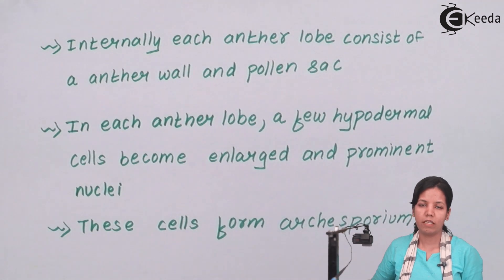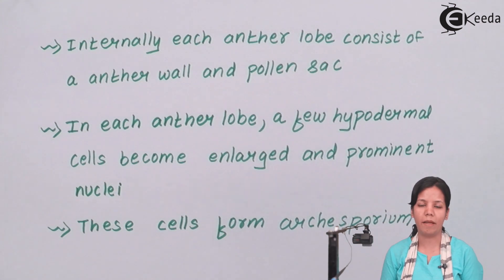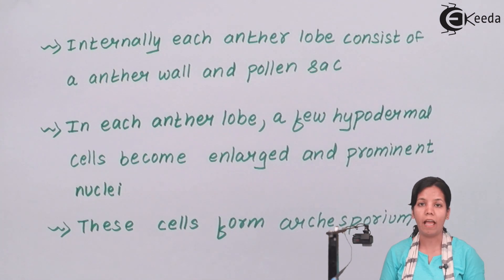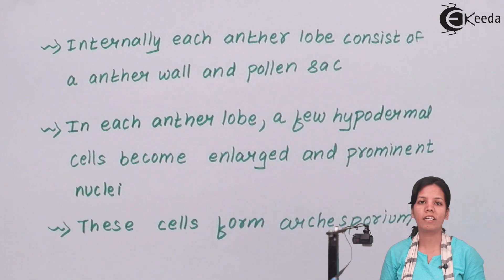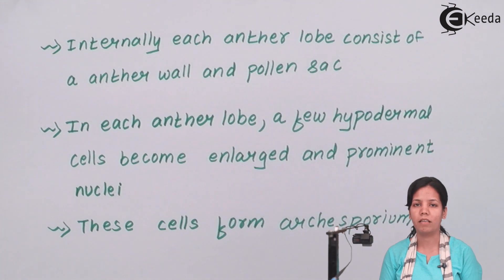In this part of the chapter, we have studied the structure of stamen, or the male gametophyte, and where pollen grains are present — that is, in the pollen sac. I hope you all are clear with the concept of stamen. Thank you.